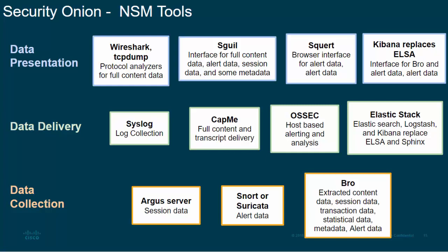Security Onion has a range of network security monitoring tools, which Richard Bettlich divides into three levels: data collection, data delivery, and data presentation. Data collectors include tools like Argus, Snort, Suricata, IDS, and Bro, gathering alert data and session data — Argus works with NetFlow data, while Bro handles session data, transaction data, statistical data, and metadata. Data delivery systems include Syslog, CapMe for full-content PCAPs, OSSEC for sending host information to the SIEM, and the Elastic Stack — Elasticsearch, Logstash, and Kibana.